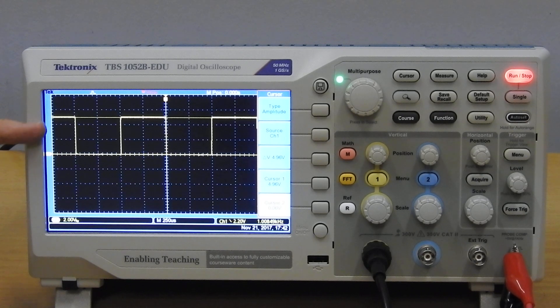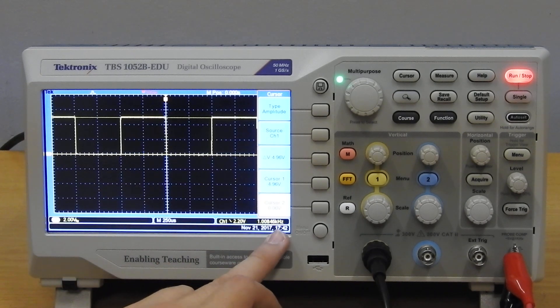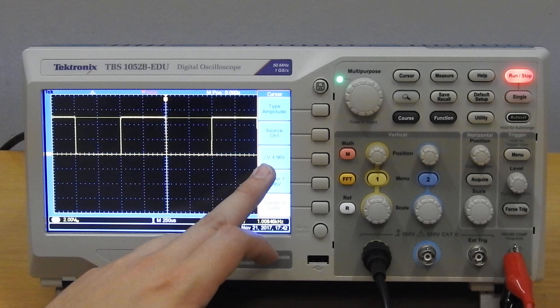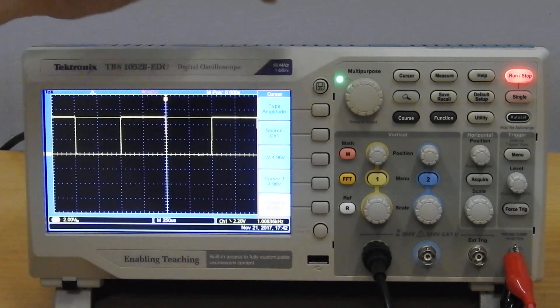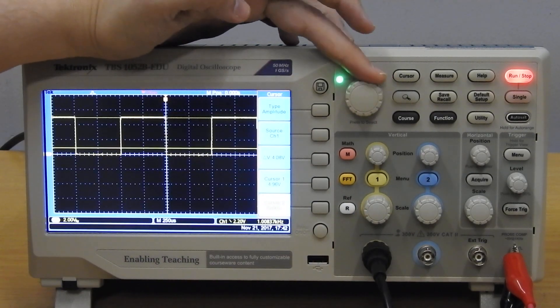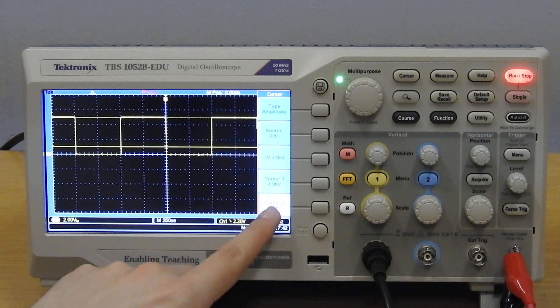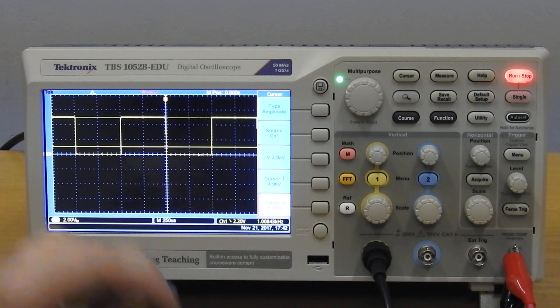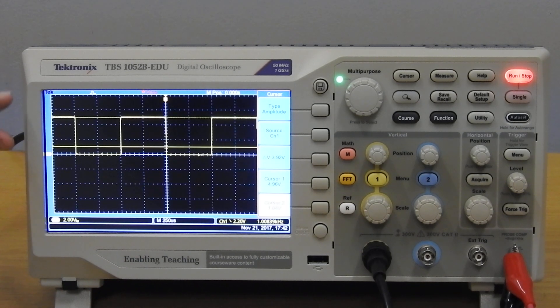And now we are measuring the distance between the two cursors. Okay, cursor 2 is at 0 volts, cursor 1 is at 4.96, and the delta is 4.96 volts. So it's the subtraction of the two. If I move this cursor upwards, see that the delta decreases and it is cursor 1 subtract cursor 2. So you can measure the voltage between two points.